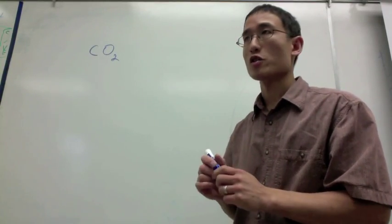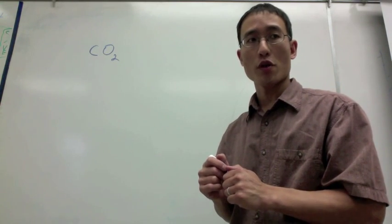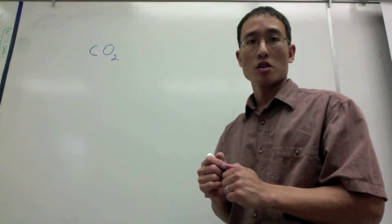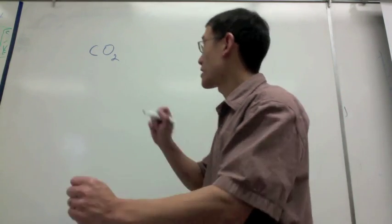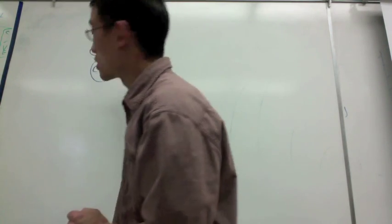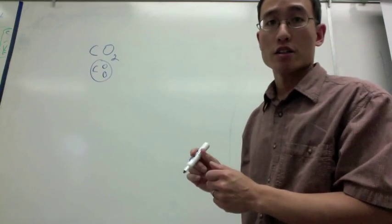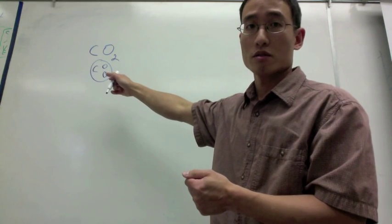Okay, we're going to continue on with mole ratios, but now we're going to start looking at moles within moles of compounds. So let's say, for instance, I have a compound, carbon dioxide. Carbon dioxide is made up of one carbon and two oxygens.